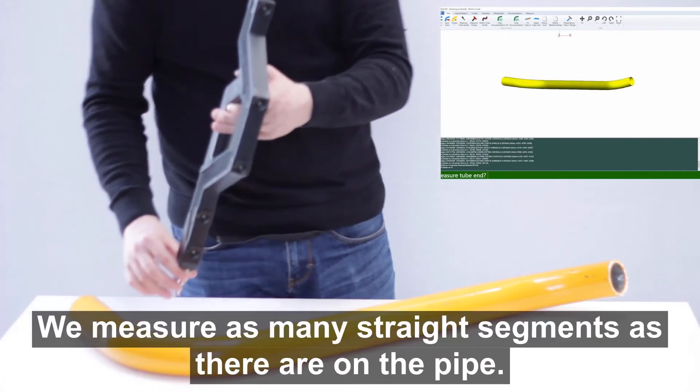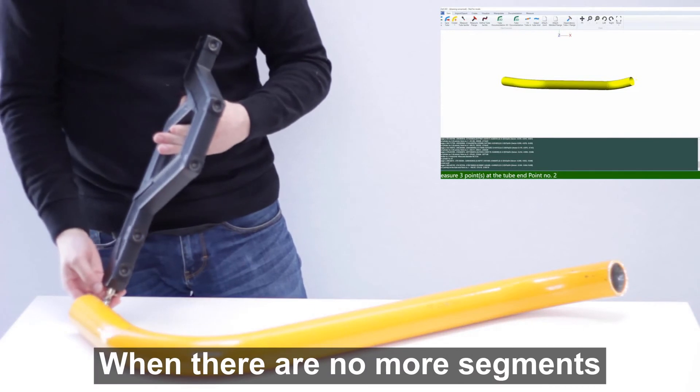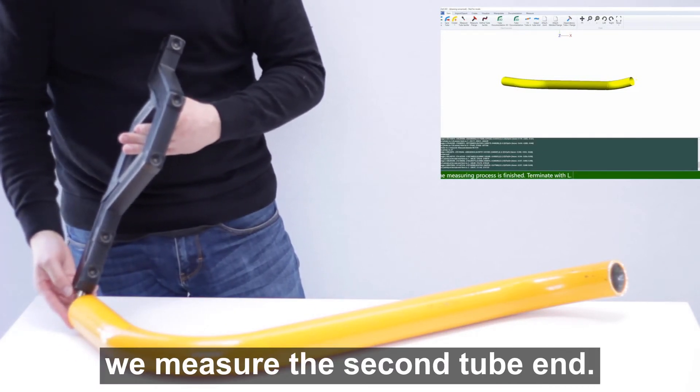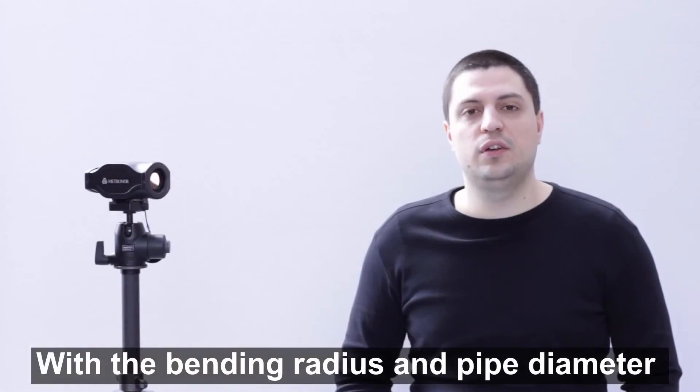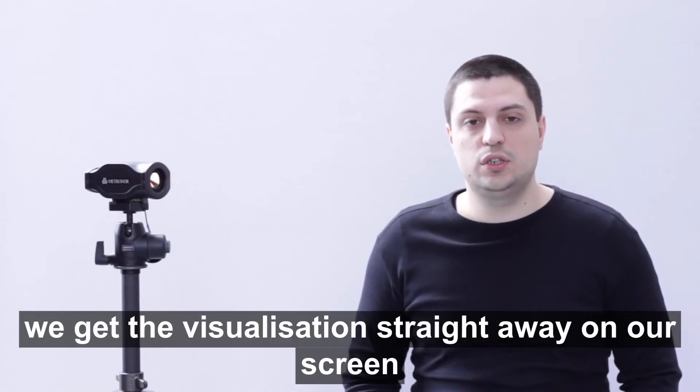We measure as many straight segments as they are on the pipe. When there are no more segments, we measure the second tube end. With the bending radius and pipe diameter, which we entered previously, we get the visualization straight away on our screen and have a digital twin.